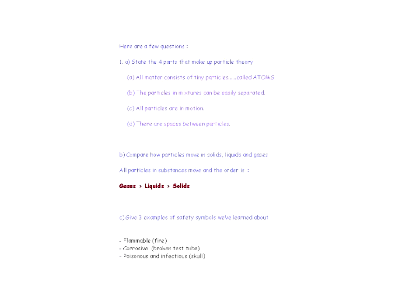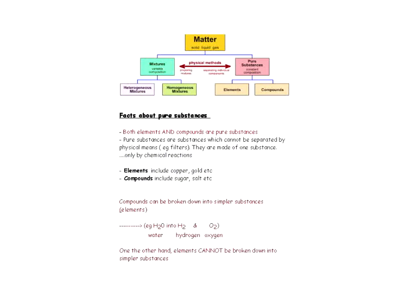Let's look at some review questions. The first question asks you to state the four parts of the particle theory — you should know those four parts. Second, compare how particles move in solids, liquids, and gases: all particles move, and from fastest to slowest the order is gases, liquids, then solids. Third, give three examples of safety symbols: flammable, corrosive, and poisonous and infectious — whose symbol is the skull.